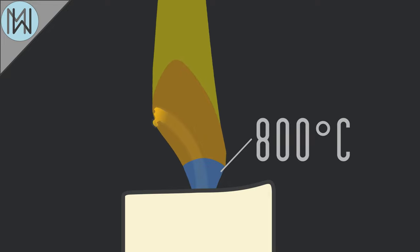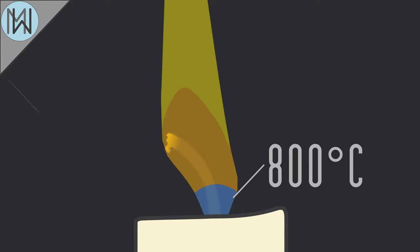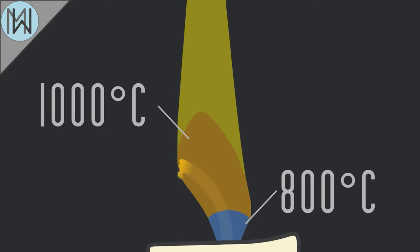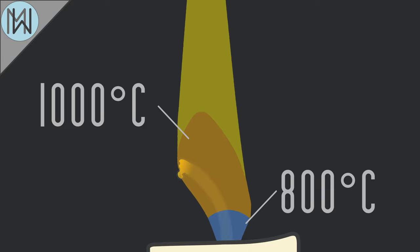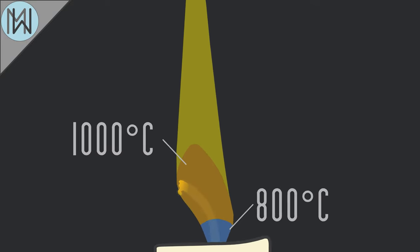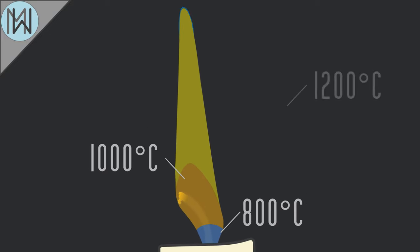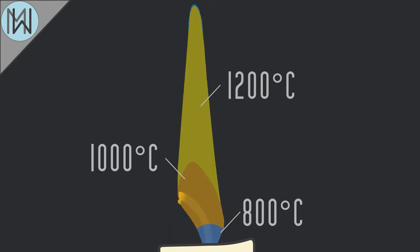Above this is a darker orange region, where temperatures climb to around 1000 degrees C. The larger area of flame, with a more yellow hue, is around 1200 degrees.